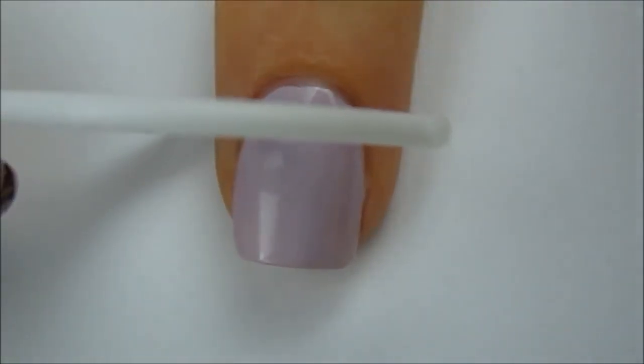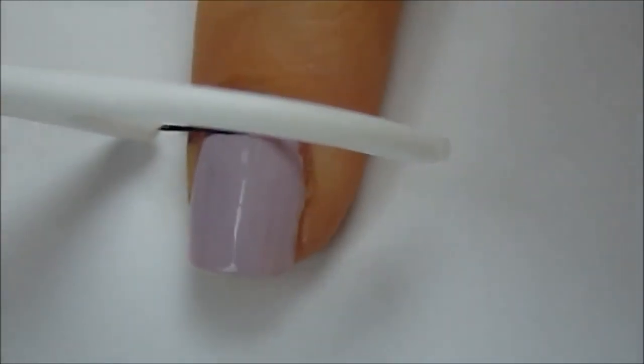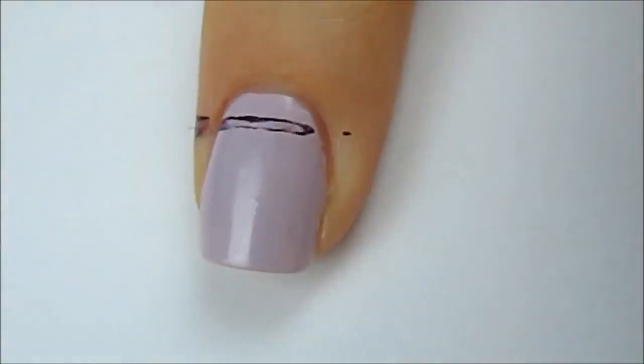To create the stripes, press the floss against the skin next to your nail first and then use a rolling motion across the nail. There you go!